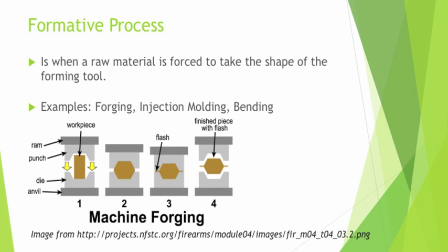Moving on to the formative process: the formative process is when raw material is forced to take the shape of the forming tool. Examples include forging, injection molding, and bending. From the picture, you can see the machine forging process — your workpiece, like the billet mentioned previously, is placed between the ram and the anvil, and these two components compress together to form the final shape. After compressing, the ram and anvil open up and you have your finished piece, with a bit of flash — material squeezed between the tooling — that can be post-processed afterwards.